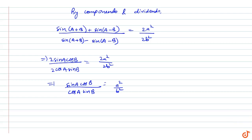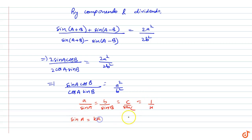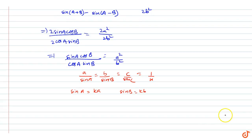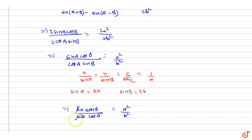According to the sine rule, we know a/sin(A) = b/sin(B) = c/sin(C), let it equal 1/k. So sin(A) = ka and sin(B) = kb. Substituting: (ka · cos(B)) / (cos(A) · kb) equals a²/b², so k cancels out.